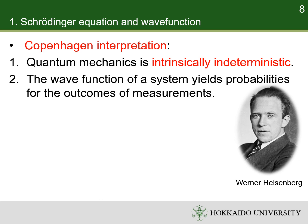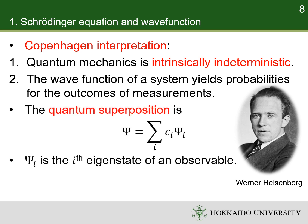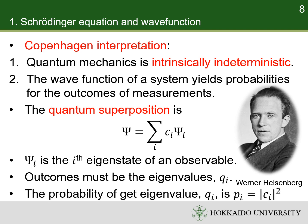Second, the wave function of a system yields probabilities for the outcomes of measurements. Specifically, a wave function is the linear combination of the eigenstates of an observable. This is the fundamental principle of quantum superposition. When the observable is measured, the outcome will be one of the eigenvalues of the observable, and the probability of getting the eigenvalue will be equal to the square modulus of the coefficient of the eigenstate.